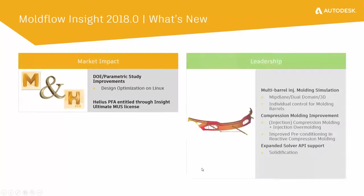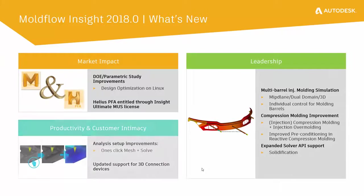In terms of new functionality, we grouped these things in three buckets: market impact, technology leadership, and productivity and user improvements. I'll go through those in different sections.